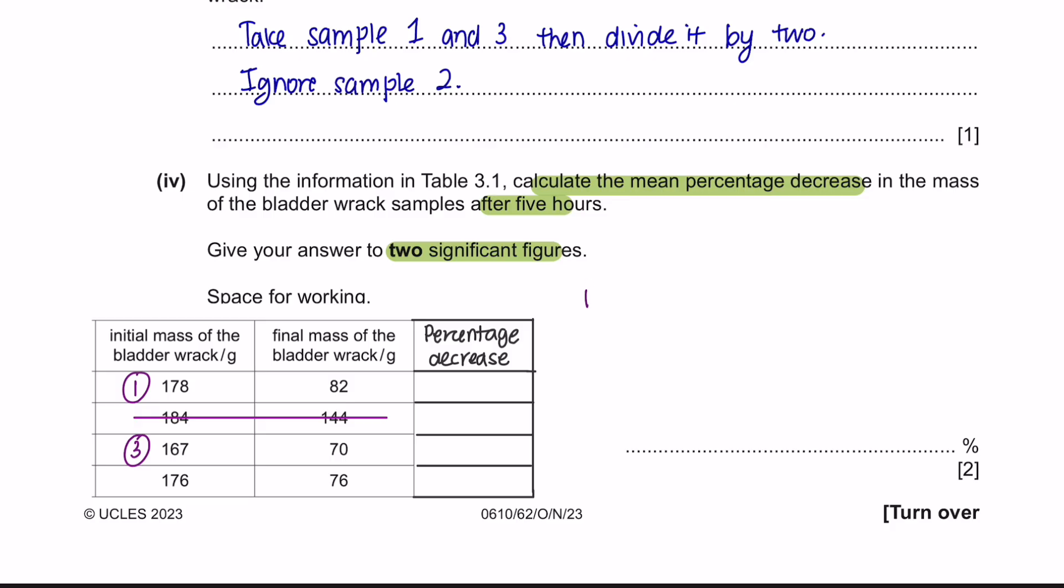To calculate the percentage decrease of sample 1, we are going to take the initial mass minus the final mass over the initial mass and multiply it by 100%, giving us 53.93%. And we will repeat the same step for sample 3, which is 58.08%. Now to calculate the mean percentage difference, we are going to add up the percentage decrease of sample 1 and 2 and then divide it by 2. And you will get 56%. Since they ask you to leave your answers in two significant figures, this will be your final answer.